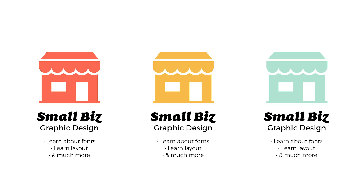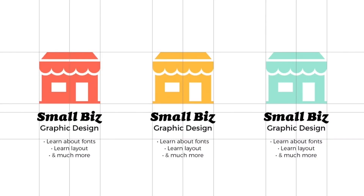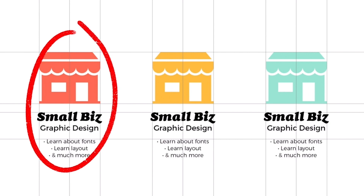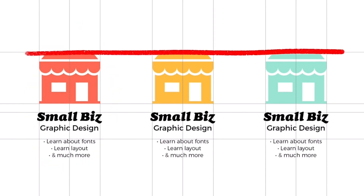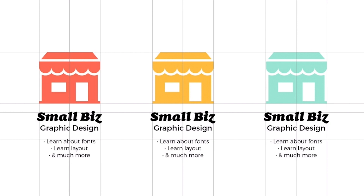Another important aspect of your layout is alignment. Imagine that your design is on a grid — you want to make sure that the graphics and text are lining up in a way that makes sense. In this example, all the graphics are centered with the text below it, and the graphic elements are all aligned with each other, and so are the text elements.